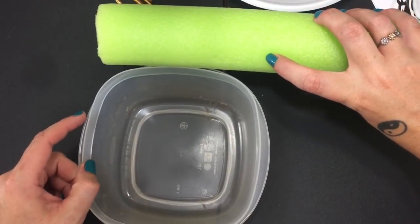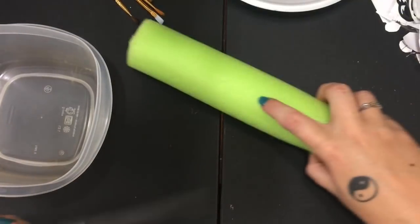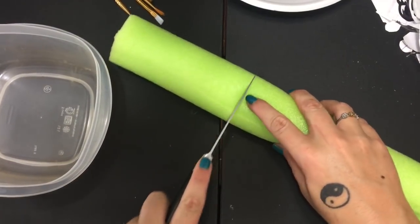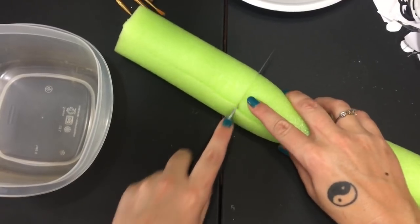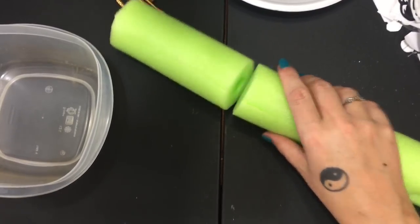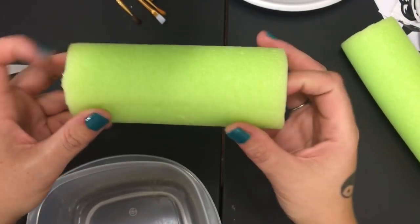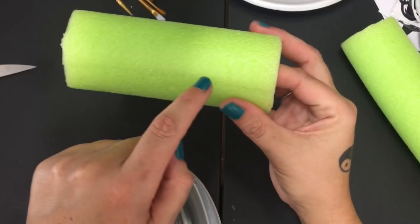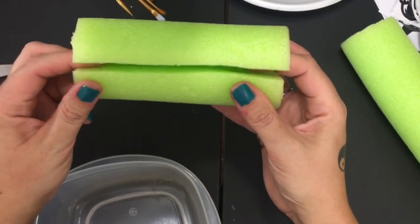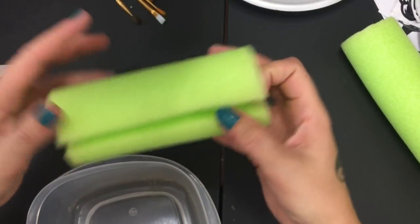I have this really sharp knife here that's excellent for cutting foam. Cut it just like that. Okay, now that you have your little piece of noodle here, you want to cut all the way down the length of it so that it opens up just like that.